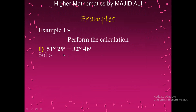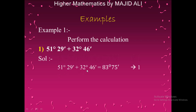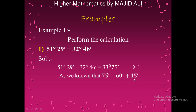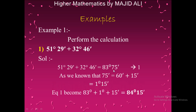Example 1: Calculate 51 degrees 29 minutes plus 32 degrees 46 minutes. Adding gives 83 degrees 75 minutes. Since 75 minutes equals 60 minutes plus 15 minutes, and 60 minutes equals 1 degree, substituting back gives the answer: 84 degrees 15 minutes.